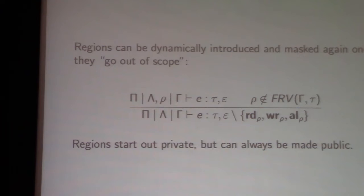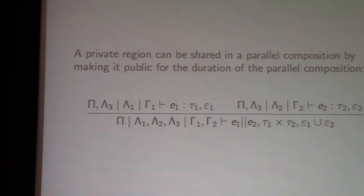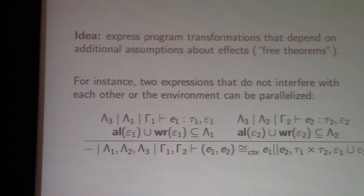Once regions become public, there are limited ways they can become private again, and one of those ways is through parallel composition. The typing rule for parallel composition is: you want to parallelize two expressions e1 and e2, you have some private regions lambda 1, 2, and 3, and you can give e1 and e2 exclusive access to some of these private regions — they remain private. But if you want to share some regions, you have to make them public for the duration of the parallel composition. Once parallel composition terminates, they become private again.